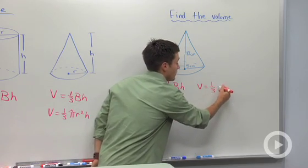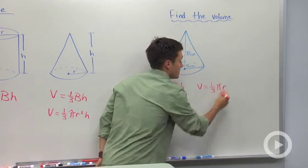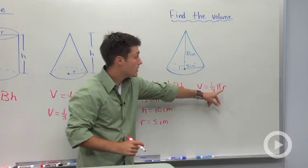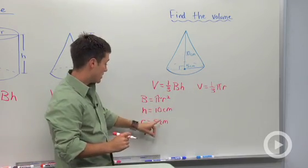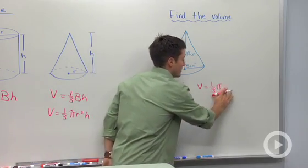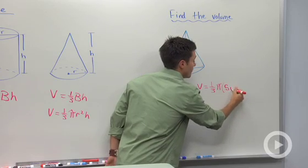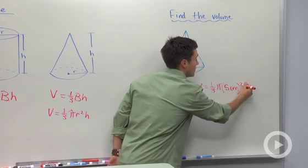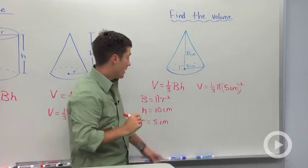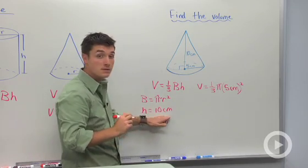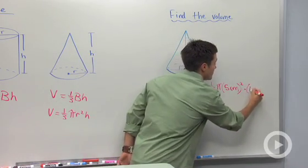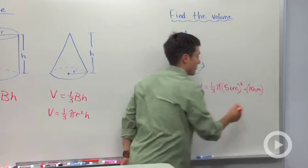So we're gonna say one-third times pi times our radius. Now instead of writing radius I'm gonna substitute in five centimeters. So I'm gonna erase that. Now I'm gonna write five centimeters and we're going to square that. And we need to multiply by our height and our height is ten centimeters. So we're gonna say times ten centimeters.